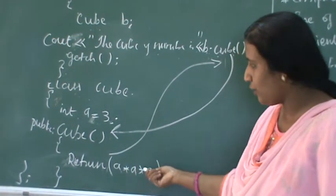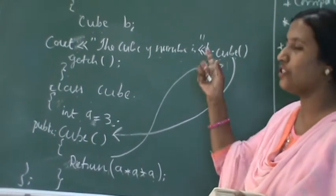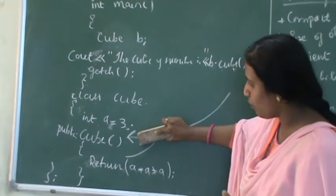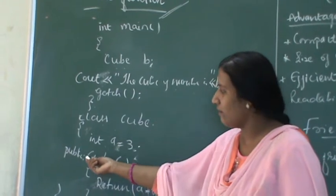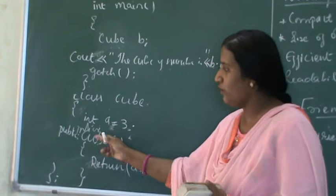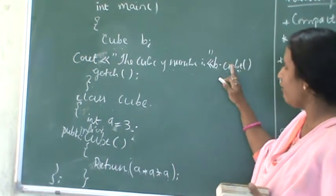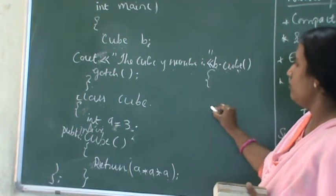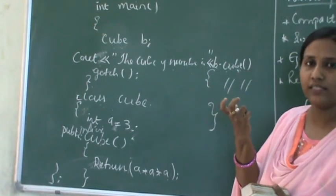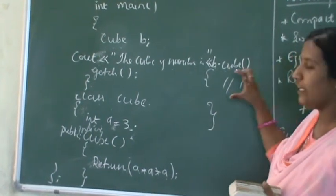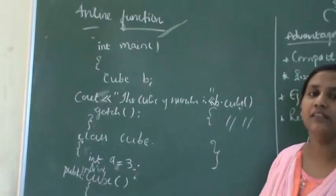What is the answer? 3 into 3 into 3 is 27, so 27 will be returned. That is how actual execution takes place. But in the case of inline function, instead of sending the control, whenever we mention a function as inline — by preceding the keyword inline before the function name — whenever that function is called, the whole set of statements will be replaced and directly placed at the location where the function is called. This is called an inline function. The meaning of inline is expand — it expands its code where it is called.